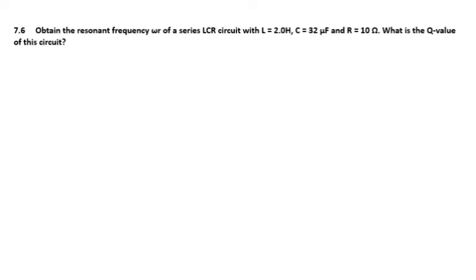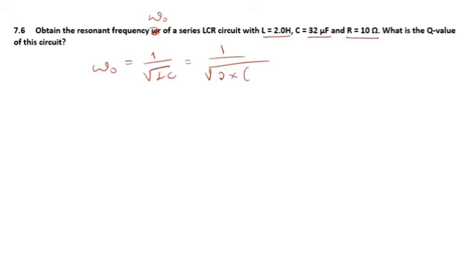Question 6: obtain the resonant frequency ω₀ of a series LCR circuit with L = 2 henry, C = 32 microfarad, and R = 10 ohm. ω₀ = 1 / √(LC) = 1 / √(2 × 32 × 10⁻⁶) = 125 radian per second.